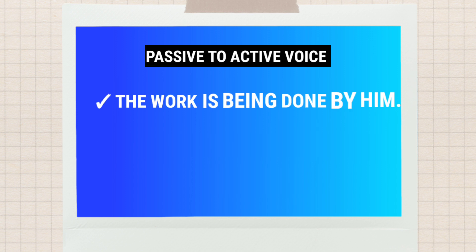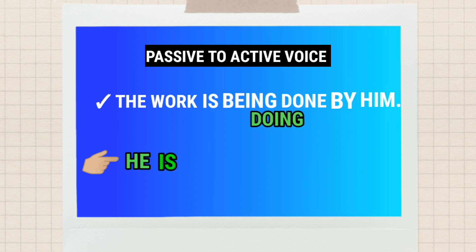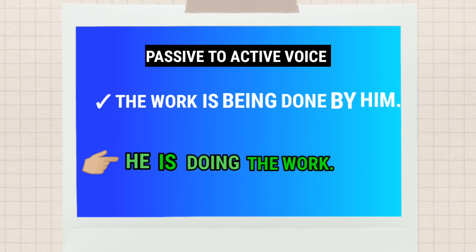Next is how to change passive voice into active voice. For example: 'The work is being done by him' — written in passive voice. To change it, bring 'He' first, then auxiliary verb 'is', then the present participle form of 'do' — doing — then the object. So you get: 'He is doing the work.' The object 'the work' is written at the end to make it active voice.